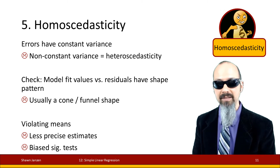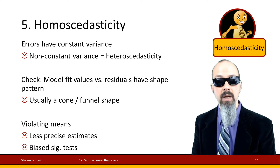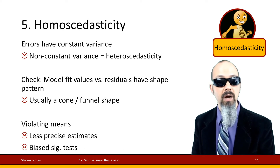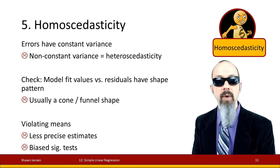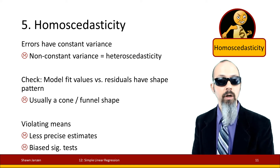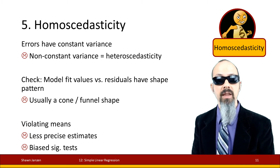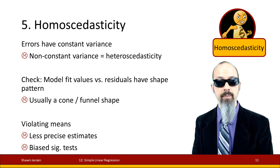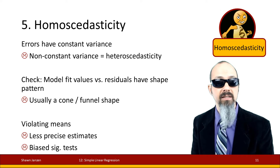The fifth assumption is homoscedasticity — compare that to heteroscedasticity. Homoscedasticity means the variance of our errors is constant; heteroscedasticity means it is not. We use a model-fit versus residuals plot: if residuals look randomly distributed with no patterns, we're good. If you see a cone or funnel shape, the errors are non-constant and you have heteroscedasticity. Failing this assumption gives you less precise estimates and biased significance tests, though your coefficients themselves will be fine.